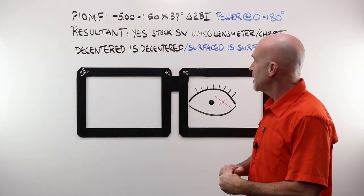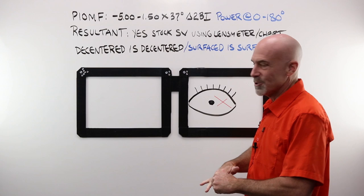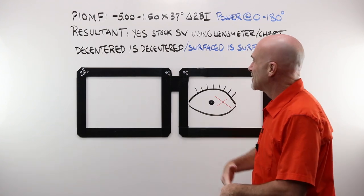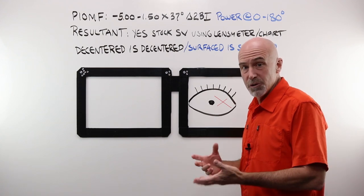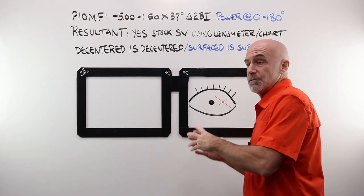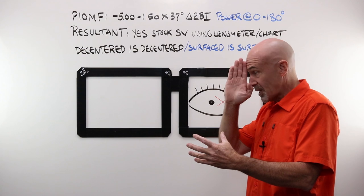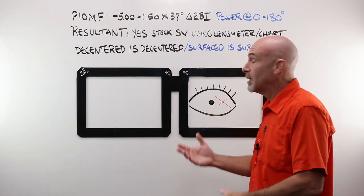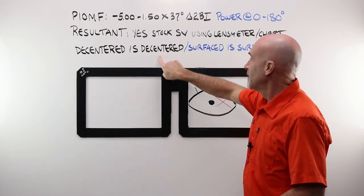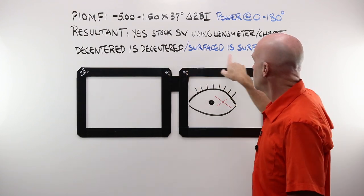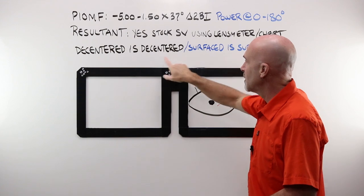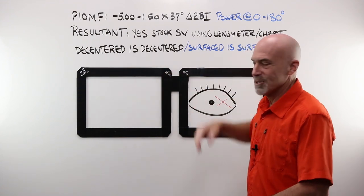Now this was for the gal who sent me the email, and I think she'll understand. Decentered is decentered. The only time we create prism using a stock single vision lens when we're forcing that lens over so the eye has to look through the area with prism, that's decentered. Surfaced is surfaced. These two really have nothing to do with one another.